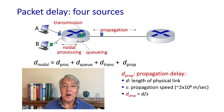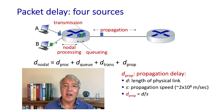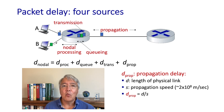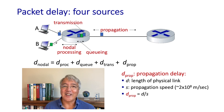So there you have it — four components of delay: the processing delay, the queuing delay, the transmission delay, and the propagation delay. Sometimes students confuse transmission delay with propagation delay, so let's look at that a little bit more carefully using an analogy.